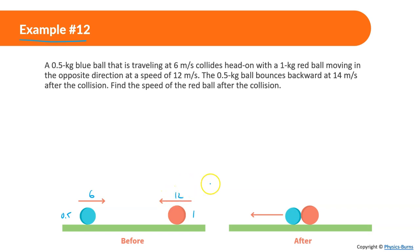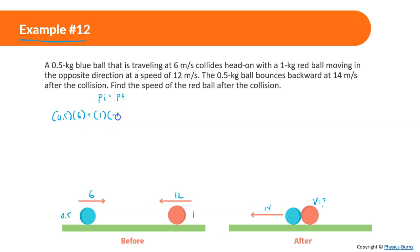The 0.5 kilogram ball bounces backwards at 14 meters per second, and we want to find the speed of the red ball. Drawing it out is important. Before the collision: the 0.5 kg ball goes 6 m/s to the right, and the 1 kg red ball goes negative 12 m/s. After the collision, the 0.5 kg ball is going negative 14 m/s to the left, and we're looking for the velocity of the red ball.